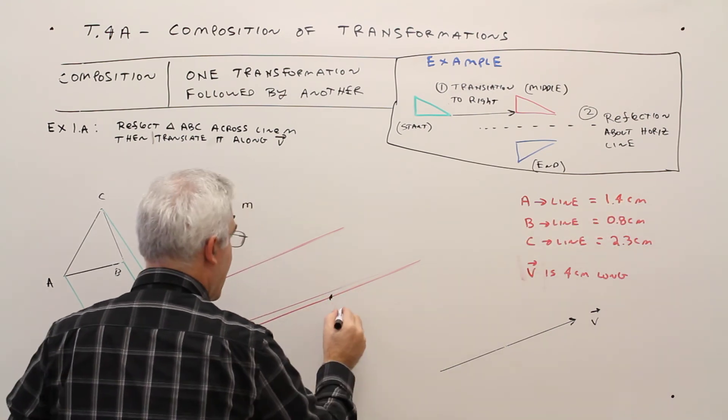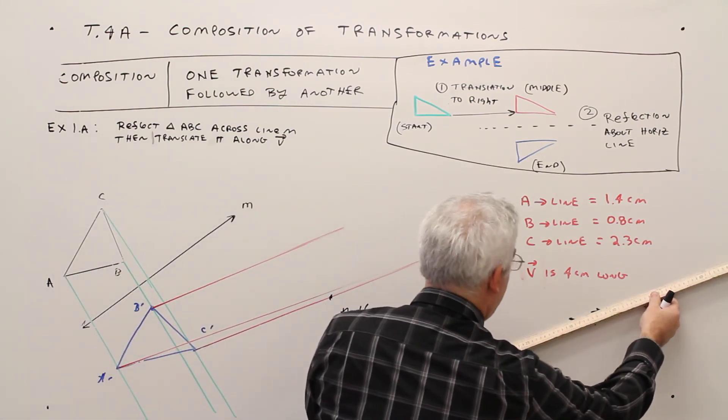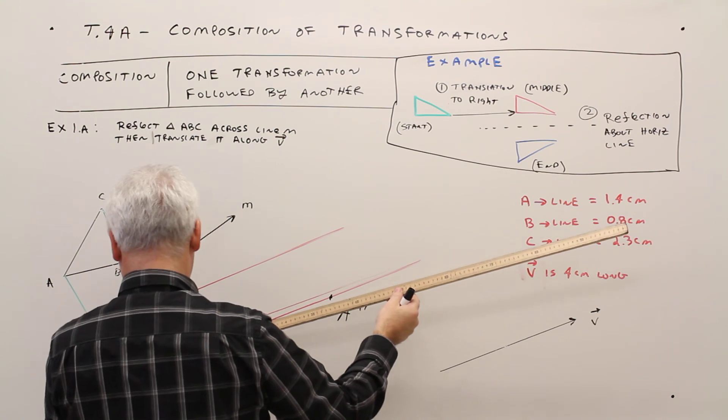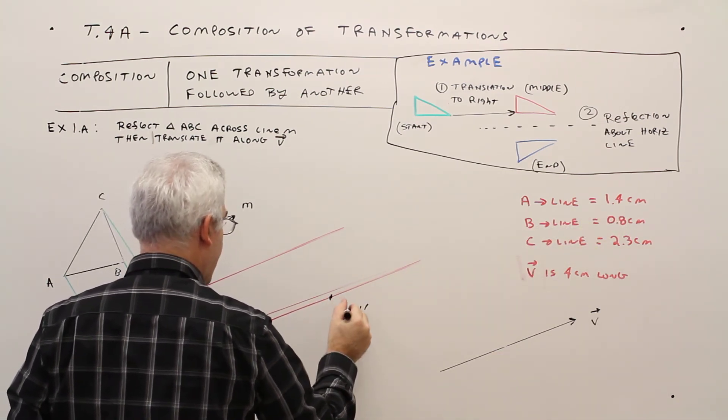And that would now be A double prime. Let me measure that again. Okay. From this point over here. Oops, C double prime, excuse me.